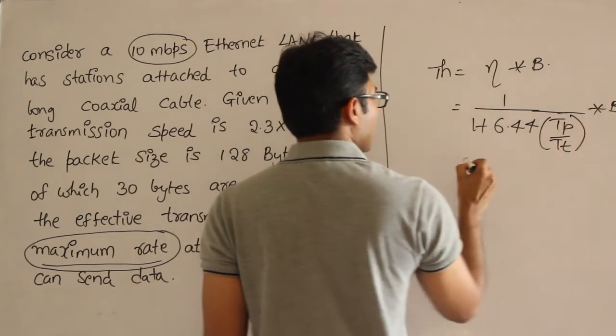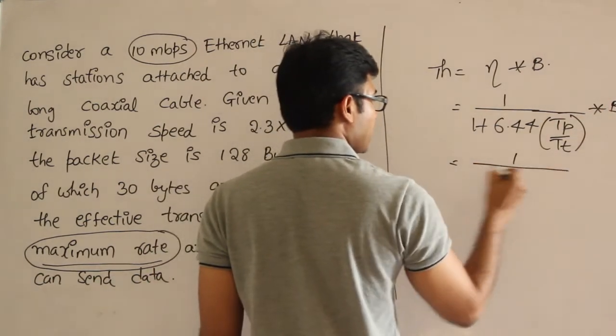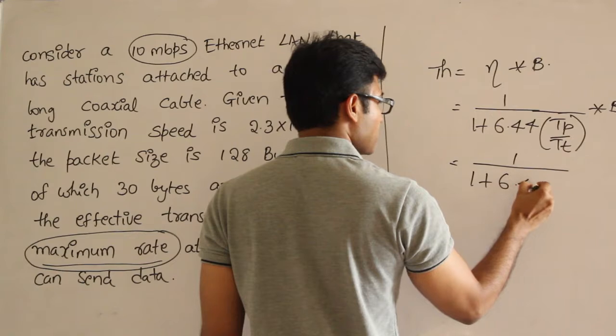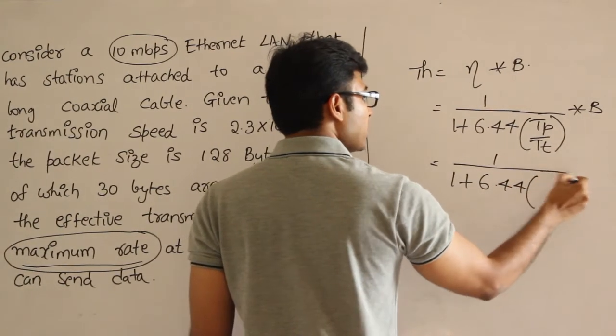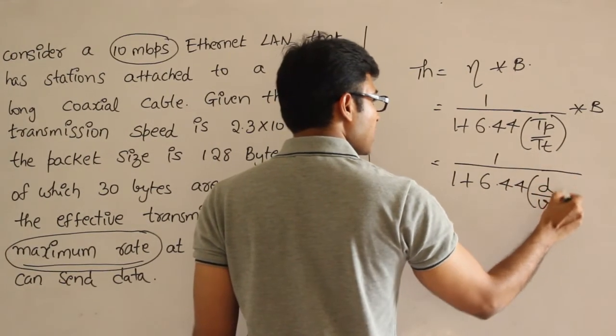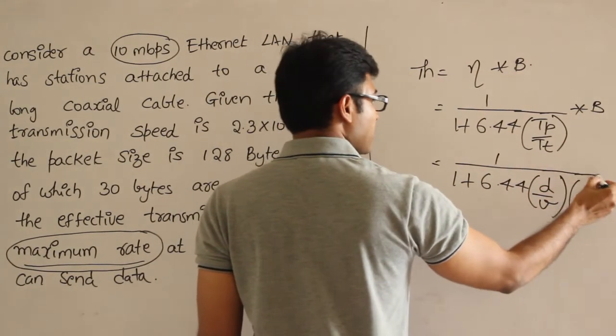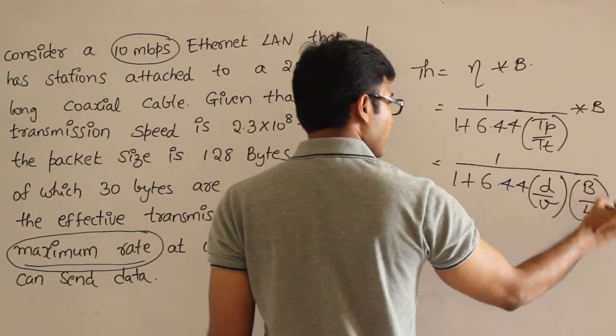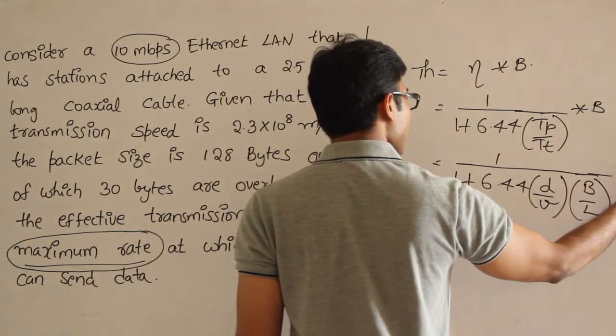To compute this, we need 1/(1 + 6.44 × Tp/Tt). Tp is D/V and Tt is L/B, so this becomes 1/(1 + 6.44 × D/V × B/L) times bandwidth.